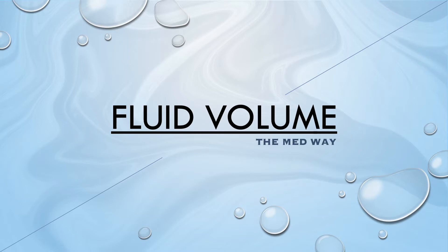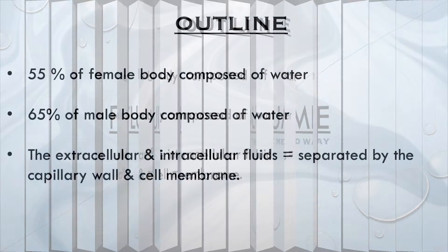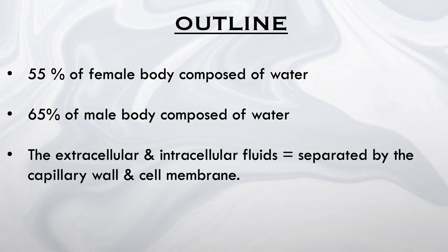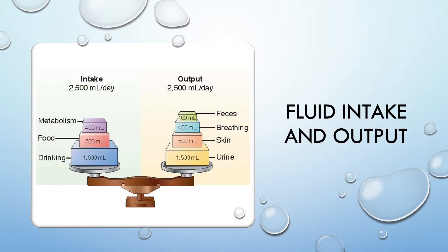As an introduction, both our electrolytes and fluid help maintain balance within our bodies, also termed homeostasis. 55% of the female body is composed of water while 65% of the male body is composed of water. There are different types of fluids: extracellular fluid, found outside of cells, and intracellular fluid, found within cells. These two fluids are separated by a capillary wall and a cell membrane, which is highly permeable, allowing for the shifting of fluid into and out of cells.